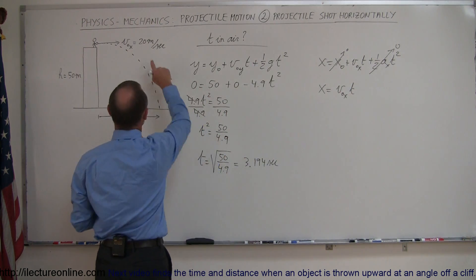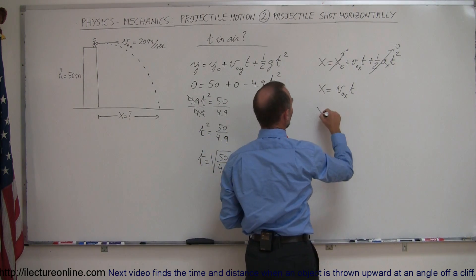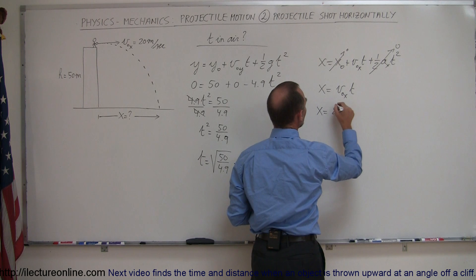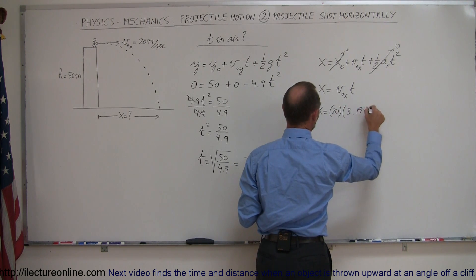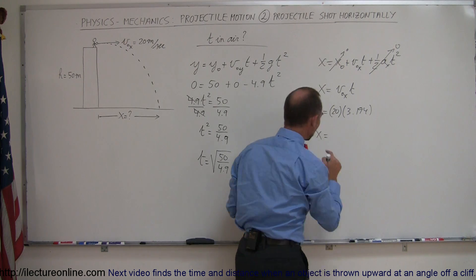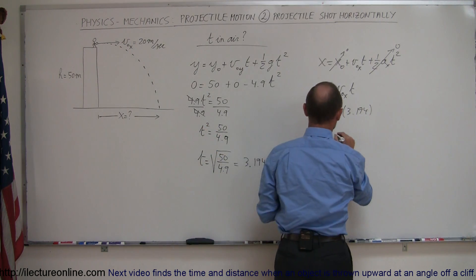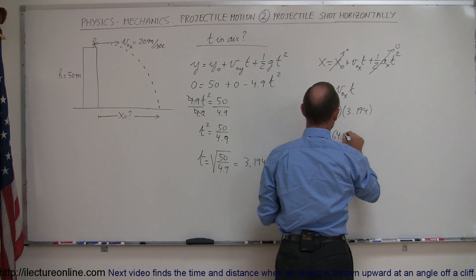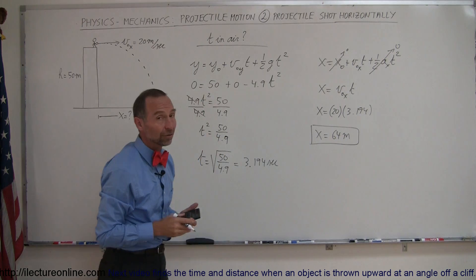All we need to know is the original velocity in the x direction, the time which we calculated here, and we can figure out the distance. x is equal to 20 meters per second times 3.194 seconds. And so x in meters will be 63.9 meters or 64 meters rounded off to two significant figures.